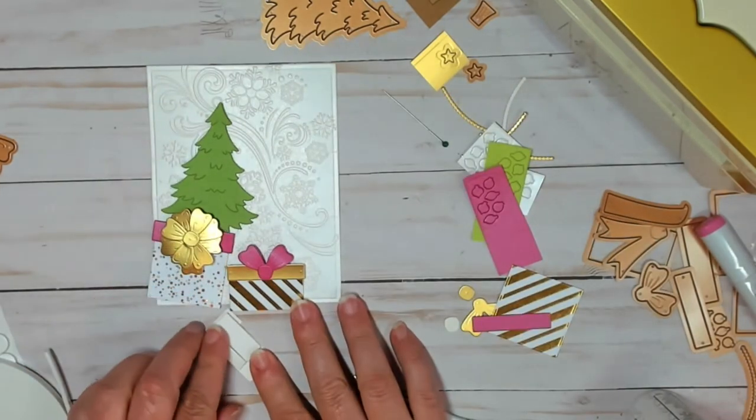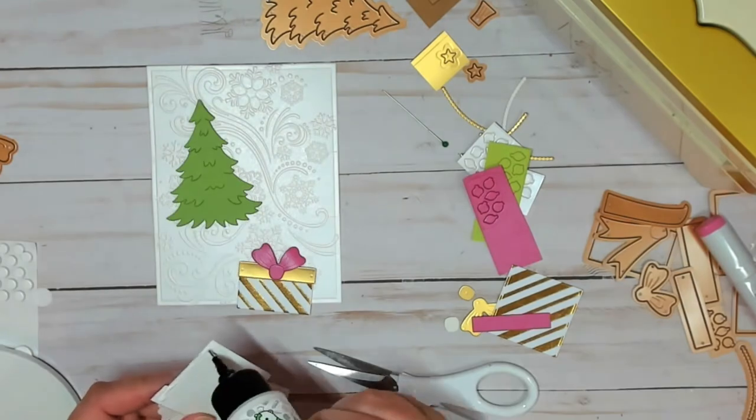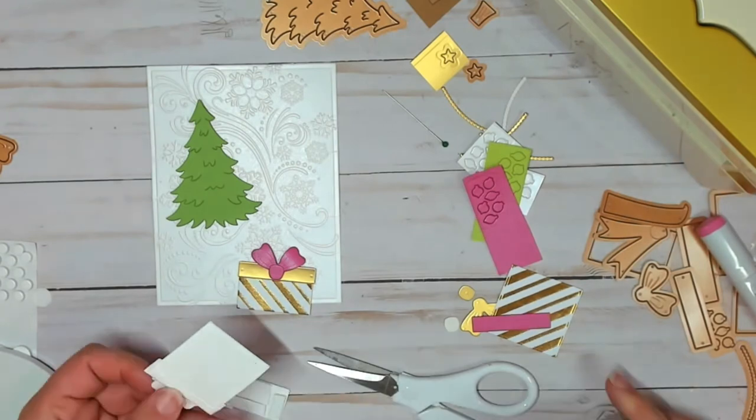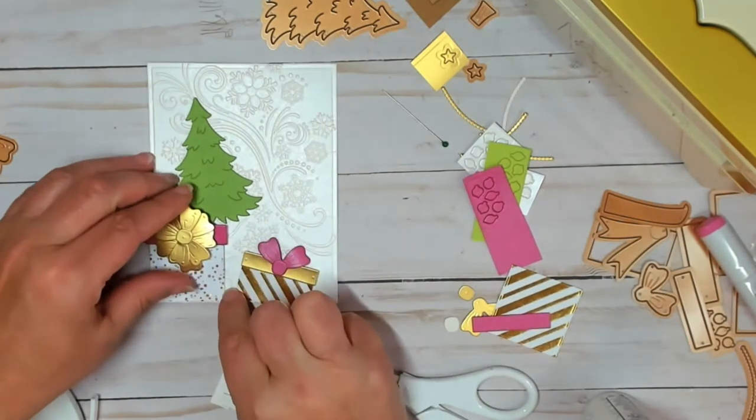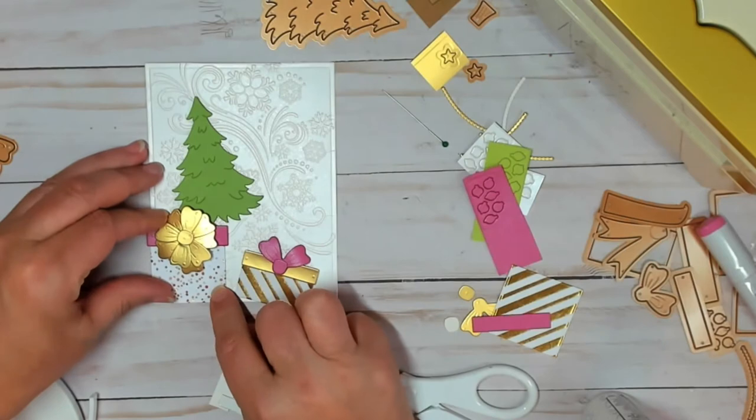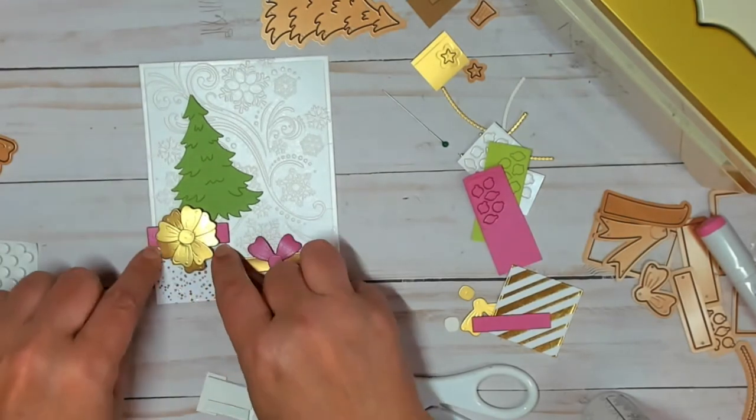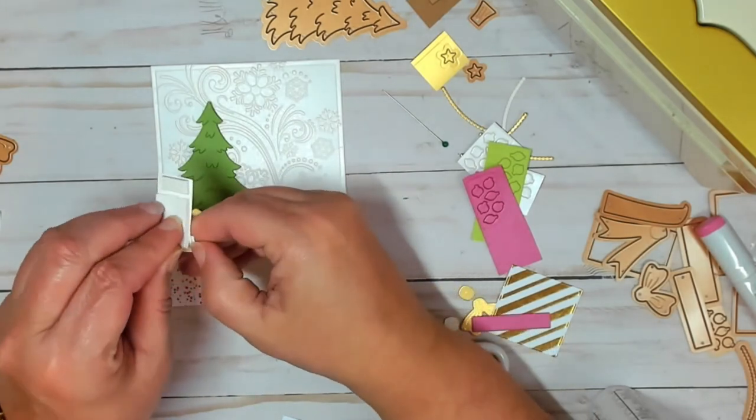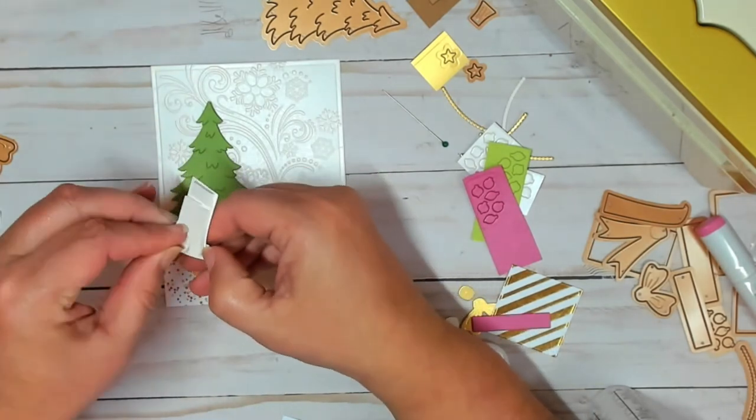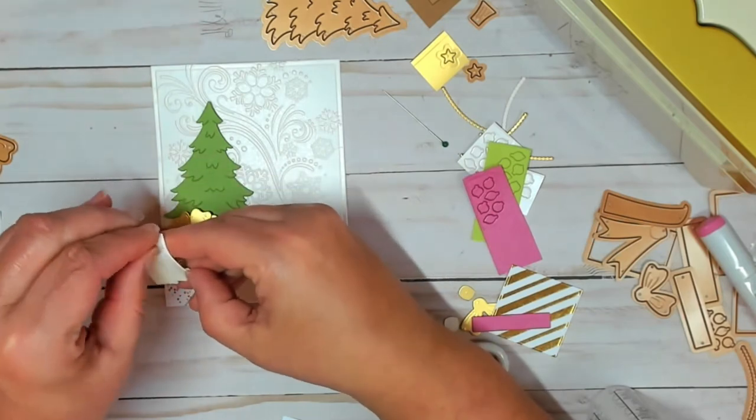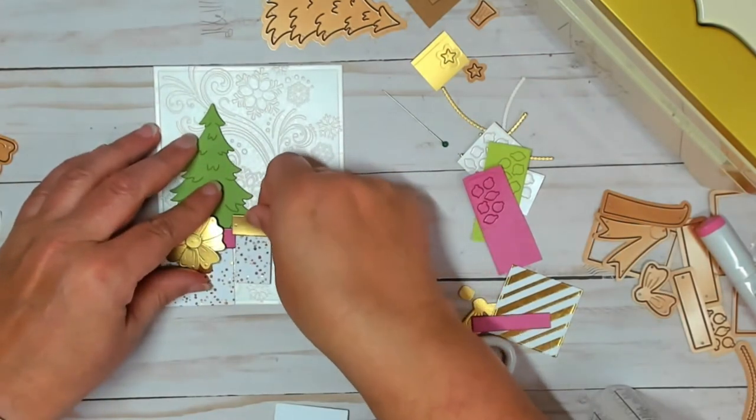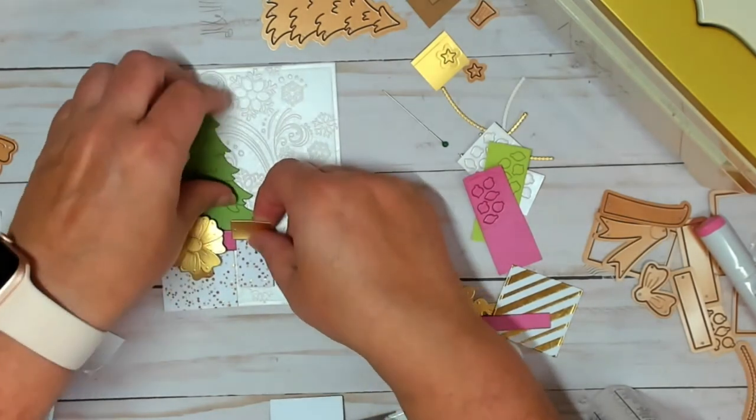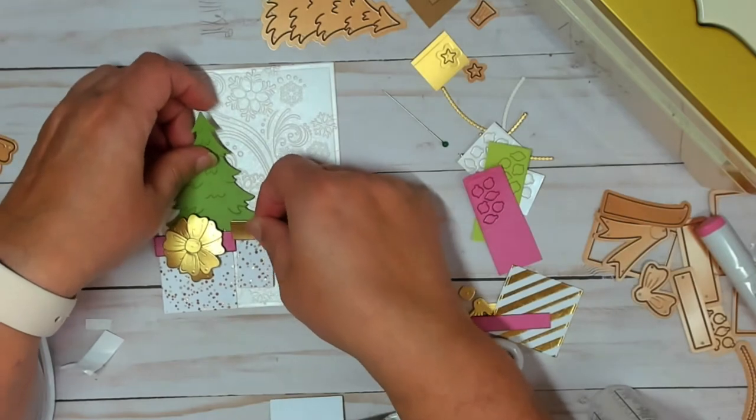You also saw the foam tape that I used - really great deal, $7.99 and you get five rolls. Now I'm just putting it together. Because I'm using foam adhesive, I'm trying to be very careful that this card is not too thick. I love fat cards, but this one, I didn't want to go more than three layers of foam adhesive. That first present, I did not put foam adhesive on the back. I just glued it onto the card itself.